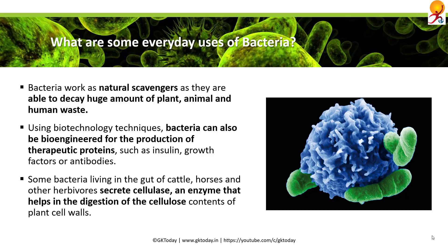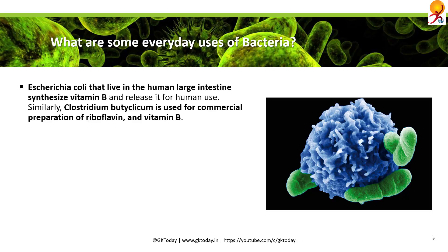Some bacteria live in the gut of cattle, horses, and other herbivores and secrete cellulase, an enzyme essential for the digestion of cellulose, which is the majority of their diet. Escherichia coli that live in the human large intestine synthesize vitamin B and release it for human use. Similarly, Clostridium butyricum is used for commercial preparation of riboflavin and vitamin B.